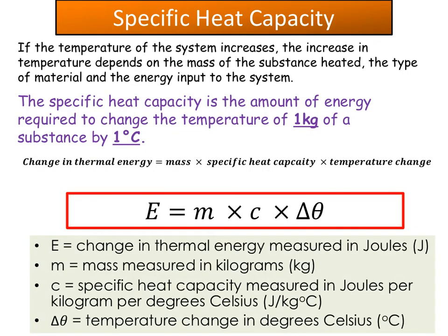Moving on to specific heat capacity. If the temperature of a system increases, the increase in temperature depends on the mass of the substance heated, the type of material, and the energy input. The specific heat capacity is the amount of energy required to change the temperature of one kilogram of a substance by one degree Celsius. In physics, 'specific' means per unit mass.